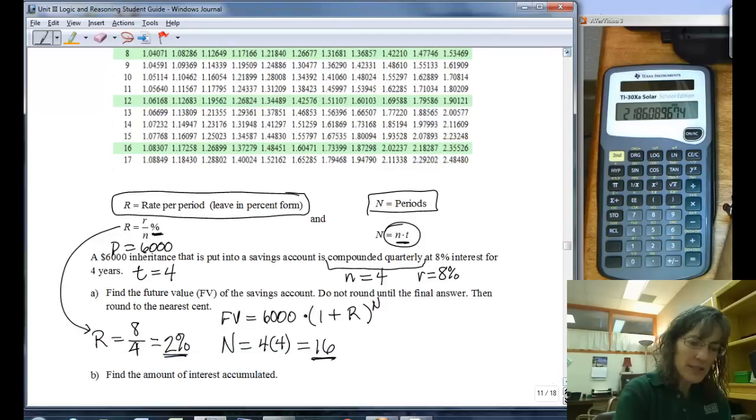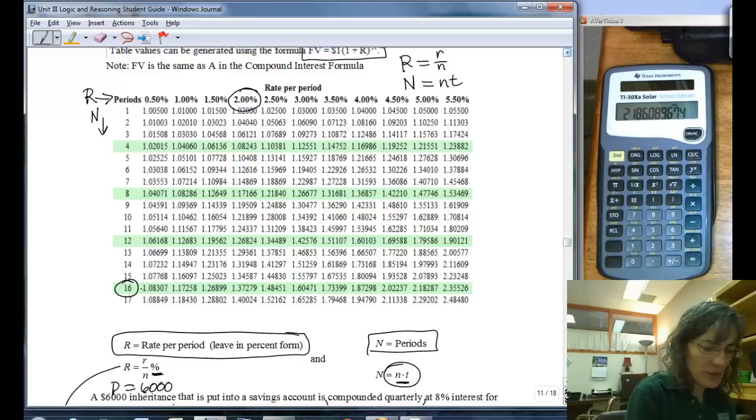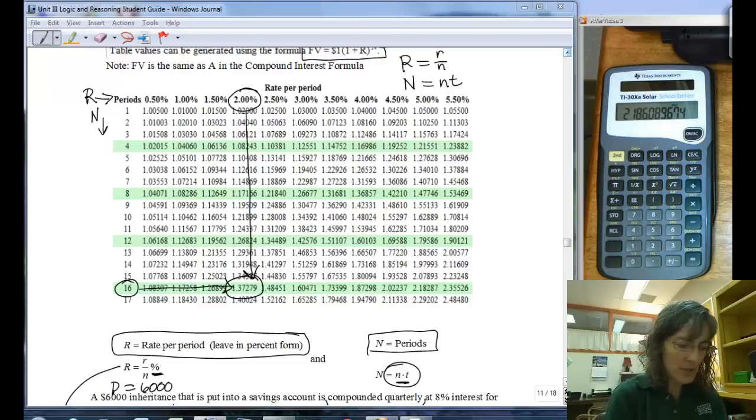Which was 2% and 16. So come back up, 2%, I'm looking in this column, and 16. I'm looking where those two intersect. So if I go down, there's my value, 1.37279.